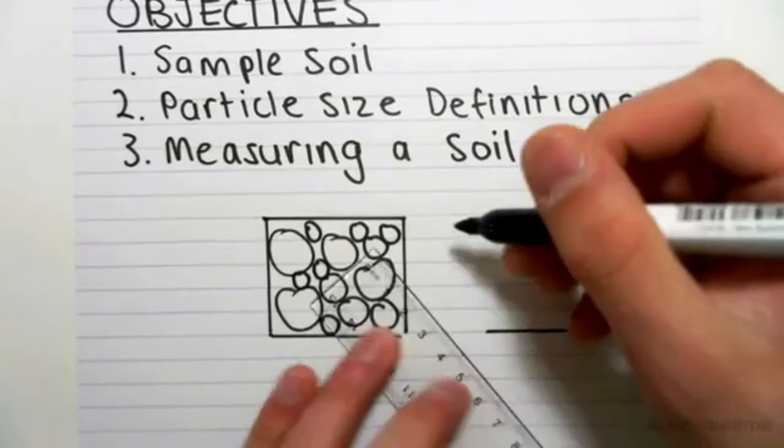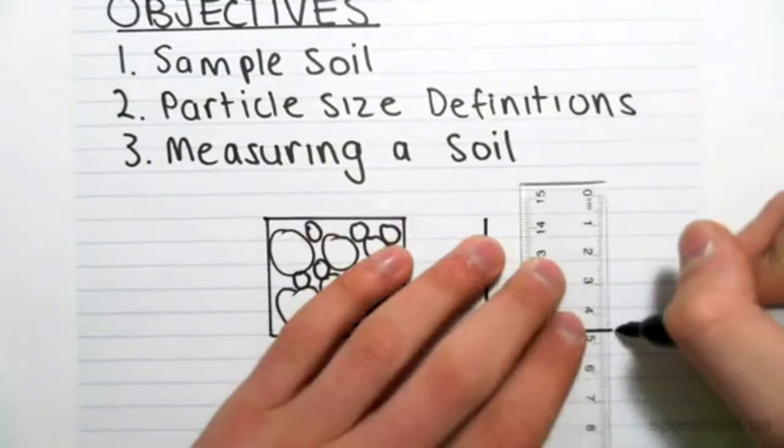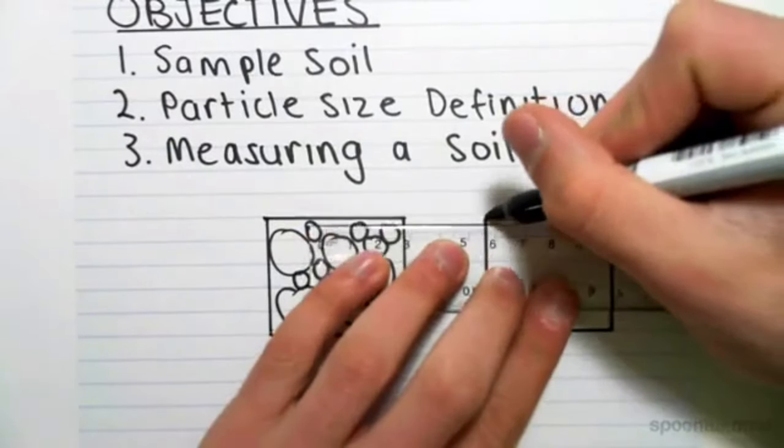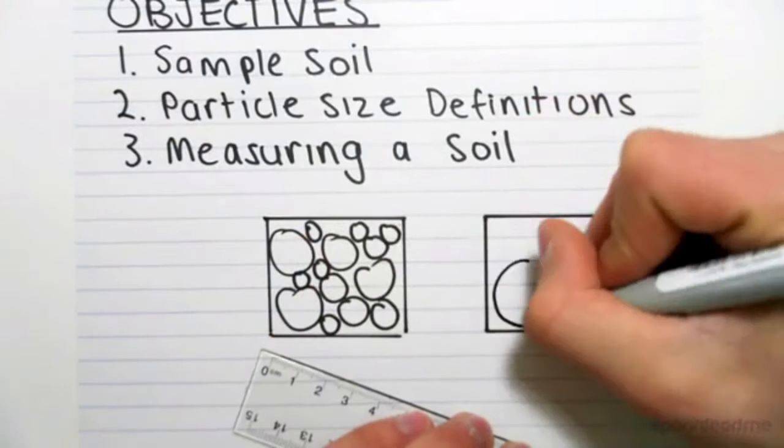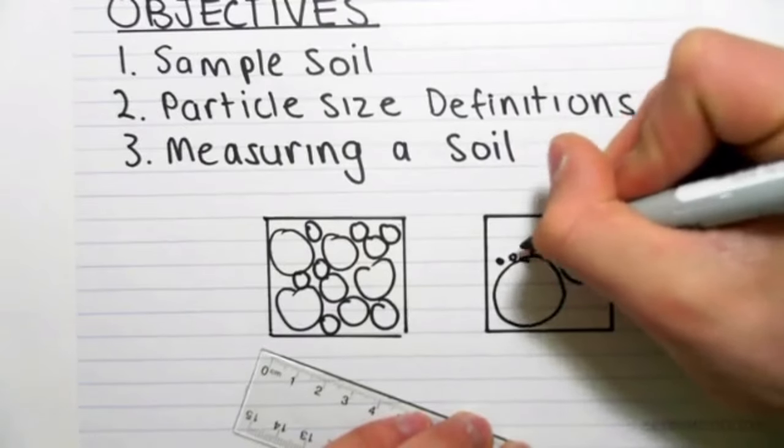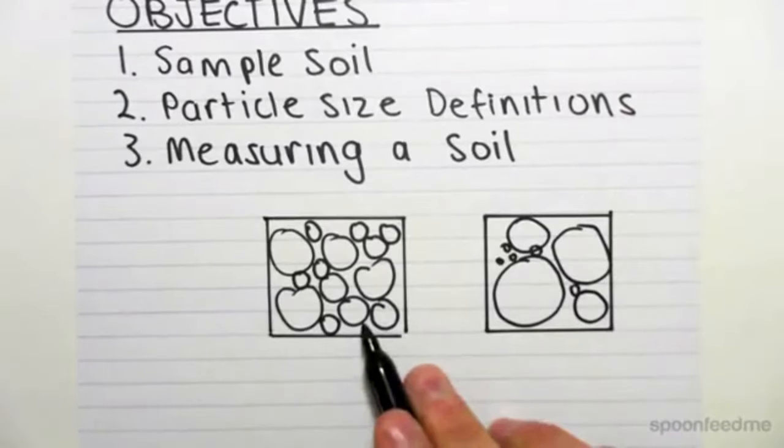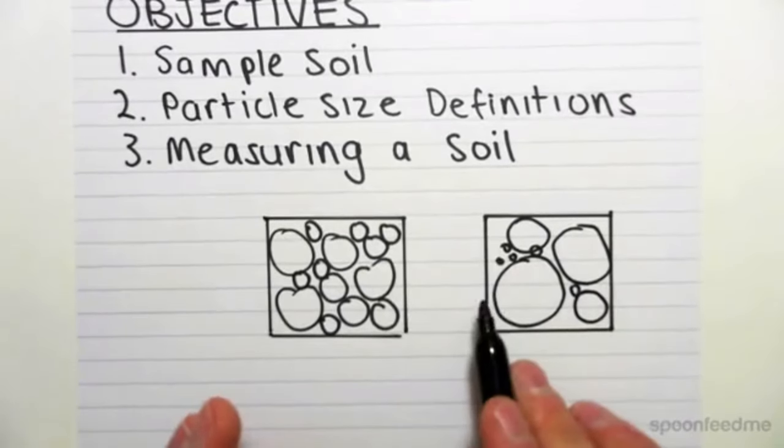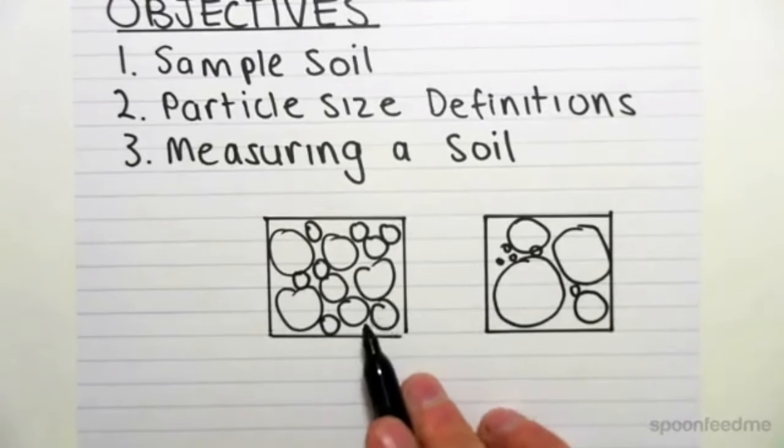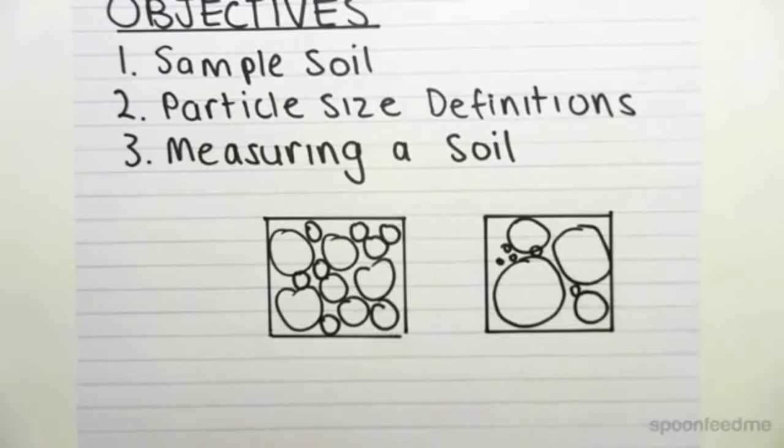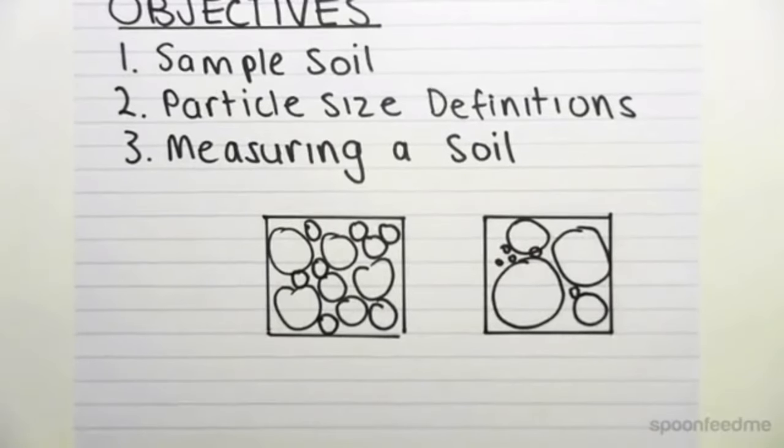If I were to show you a couple of different samples of some of the soils we could be getting, we could be getting a soil which has lots of big particles and lots of small particles. This soil compared to this soil would be defined completely differently because of the distribution of the different particle sizes. We need to come up with a way of defining different particle sizes.